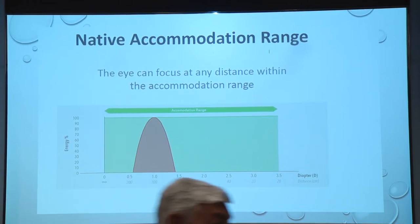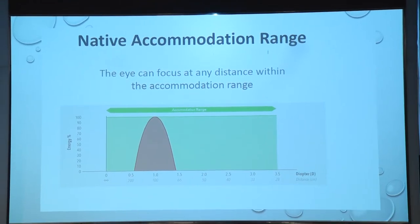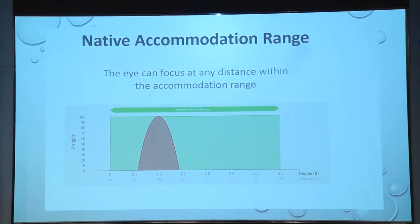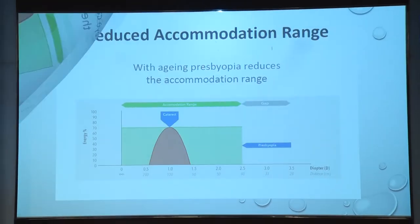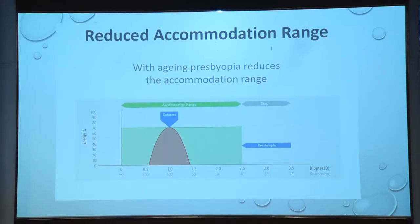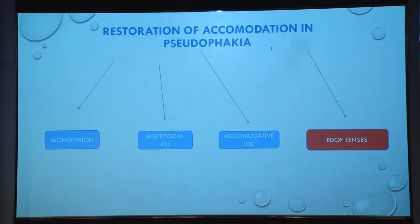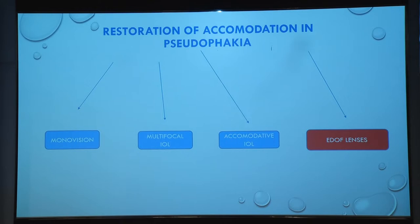In the presbyopic age our accommodation is largely lost. Especially in a cataract patient, we have presbyopic correction and we lose accommodation. Now, how to restore accommodation in pseudophakia — we have plenty of options we are all aware of.